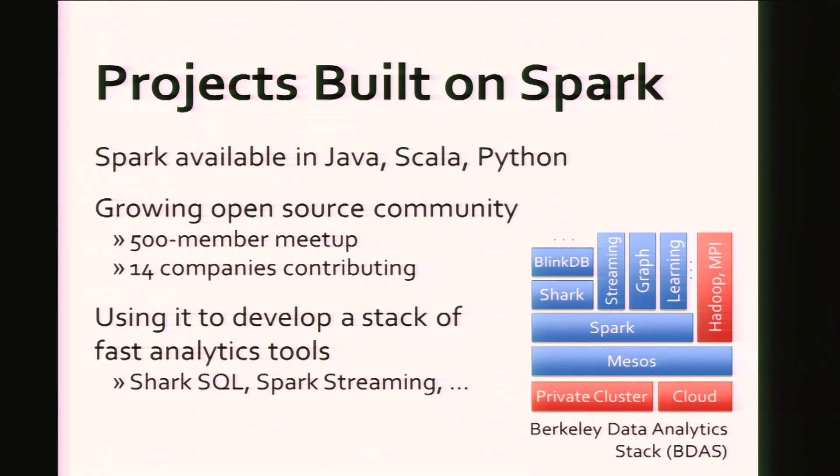Spark is an open-source project available in Java, Scala, and Python, and we're fortunate to have a growing open-source community. We have a meetup in the San Francisco area with over 500 members, and in the past year, 14 companies have contributed code to Spark. We're using Spark in the AMP lab to build a stack — it's one component of a stack of next-generation analytics tools, including large-scale SQL and stream processing.